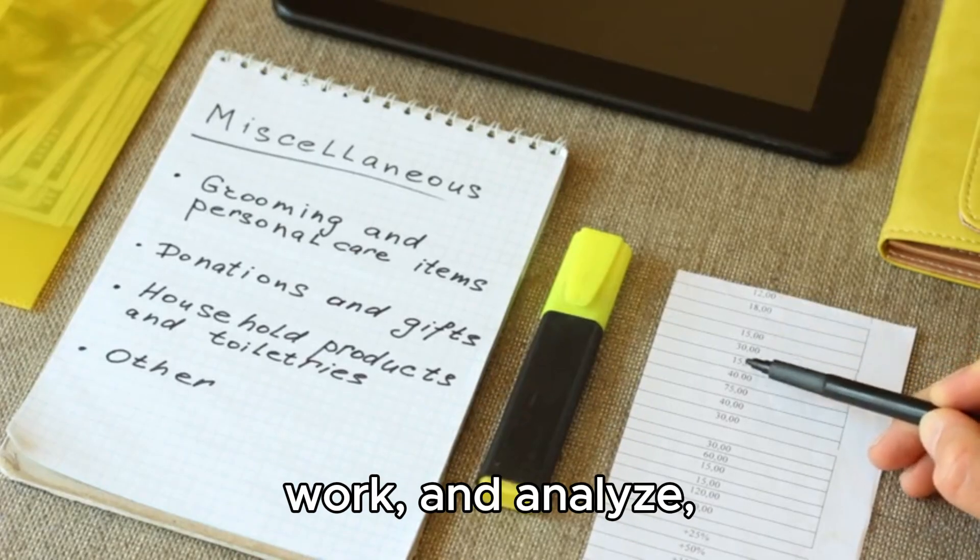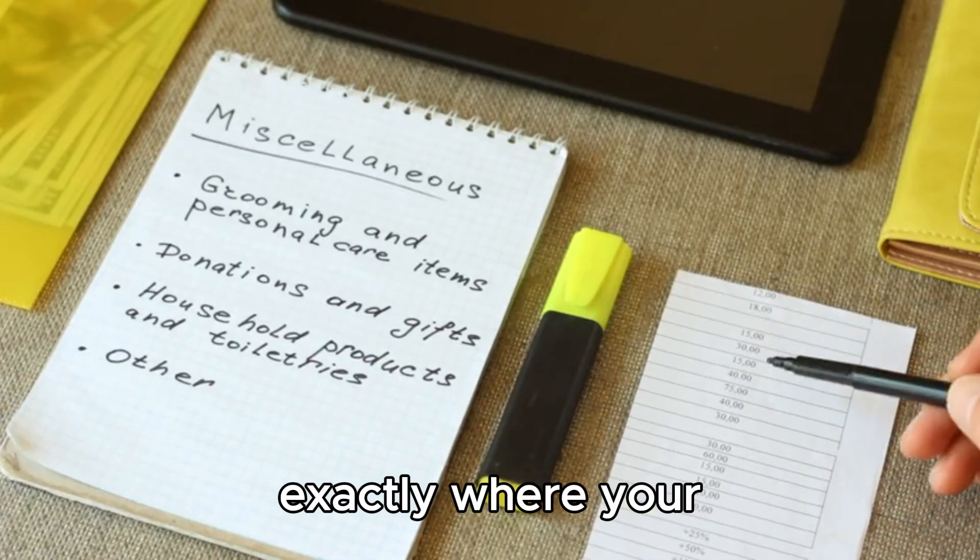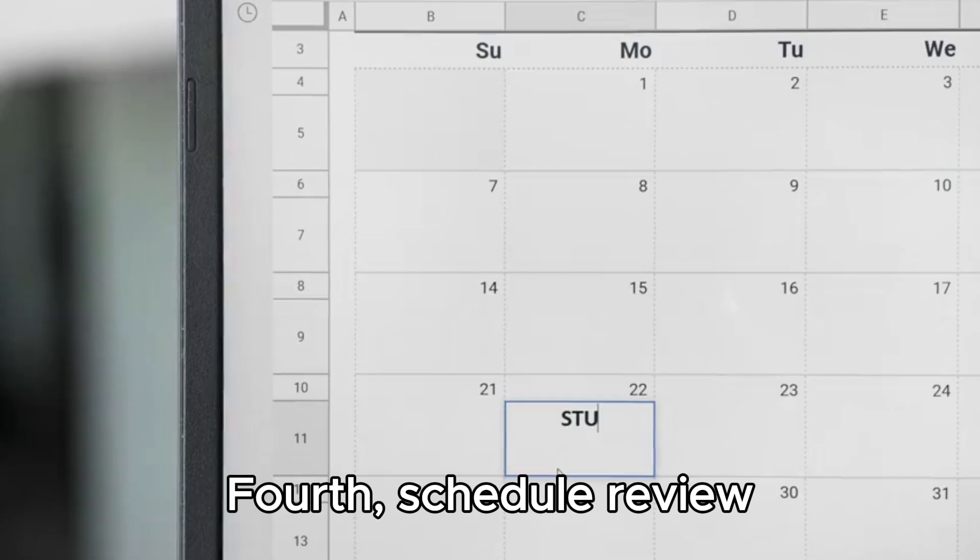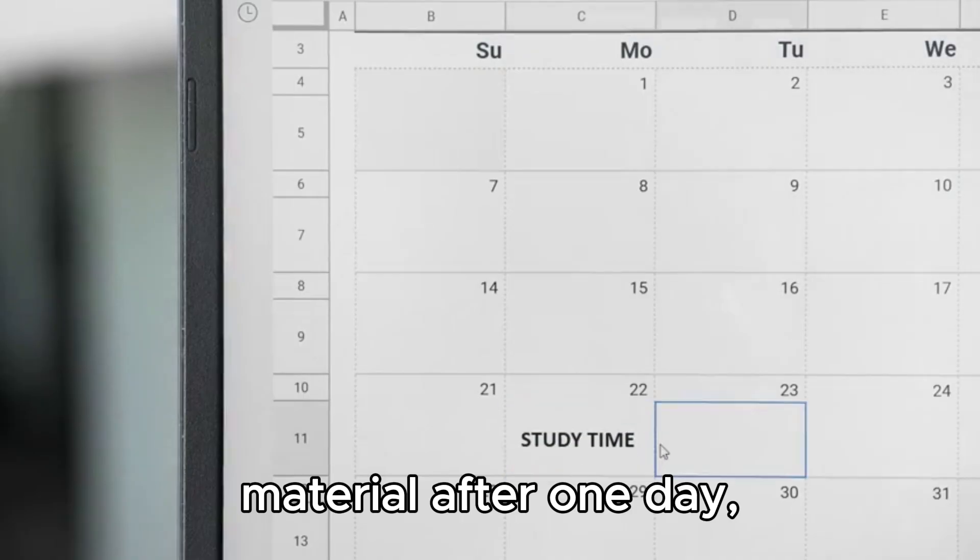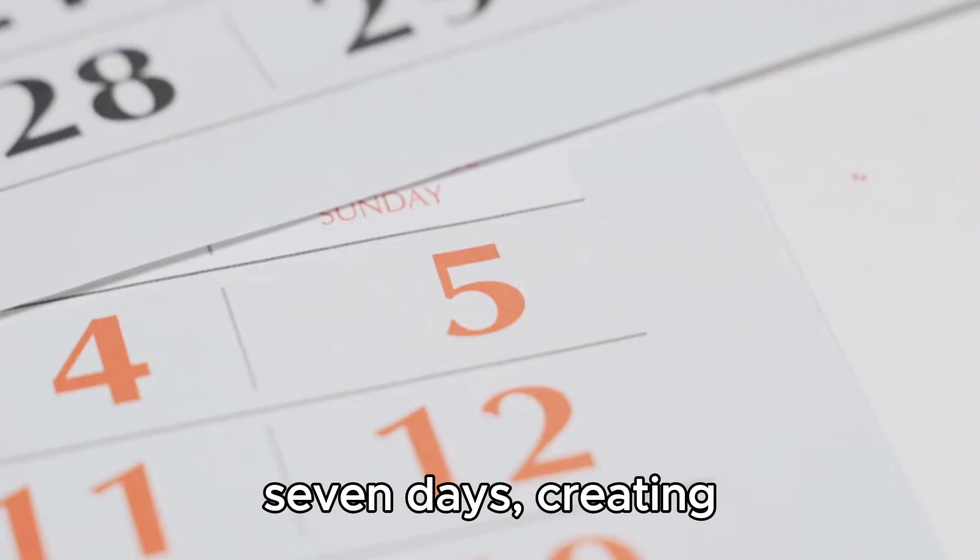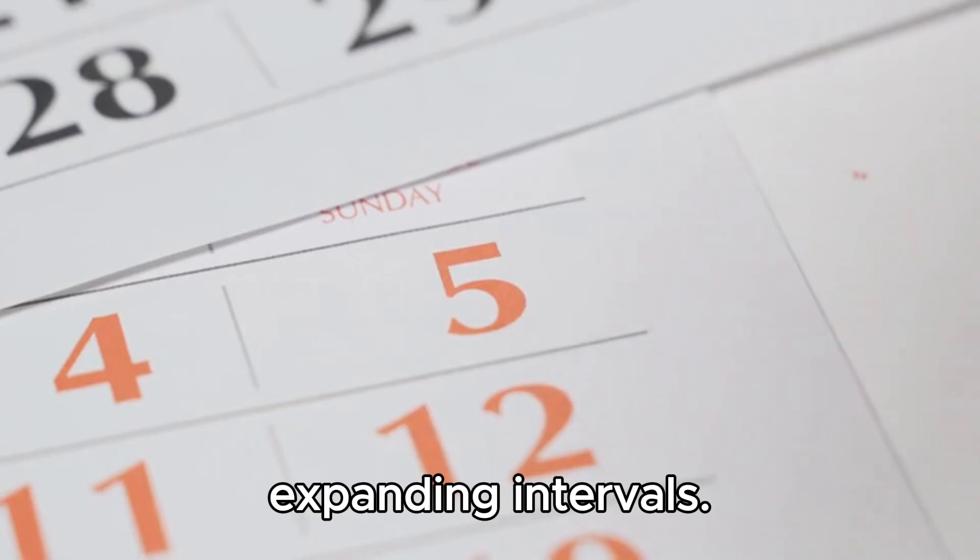Third, review your work and analyze exactly where your reasoning went wrong. Fourth, schedule review sessions for the same material after one day, then three days, then seven days, creating expanding intervals.